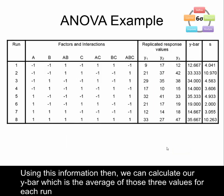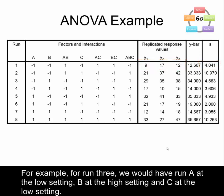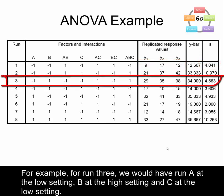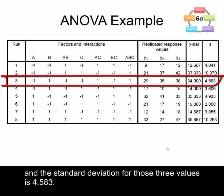Using this information we can calculate our y-bar, which is the average of those three values for each run, and our standard deviation for the three values for each run. For example, for run 3 we would have run A at the low setting, B at the high setting, and C at the low setting. We would have had three replicated responses of 29, 35, and 38. Therefore our average of those three values is 34 and the standard deviation is 4.583.